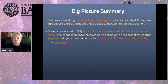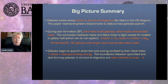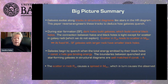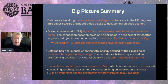Scatter in effective radius leads to scatter in black hole mass. At fixed stellar mass, star-forming galaxies with larger radii actually have smaller black holes. Galaxies begin to quench when the total energy emitted by their black holes is some constant times their halo gas binding energy. This simple concept is able to explain the tilted, slanted boundaries that divide quenched and star-forming galaxies in structural diagrams, if the constant is of order four. The scatter in galaxy radii causes a spread in black hole mass at fixed stellar mass, which in turn causes the observed spread in quenching masses and the sloped quenching boundaries.